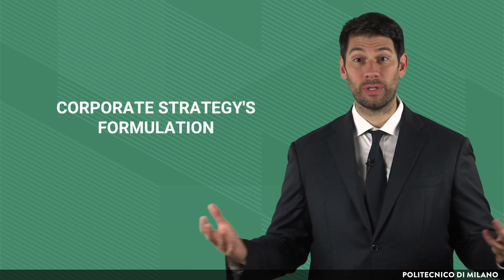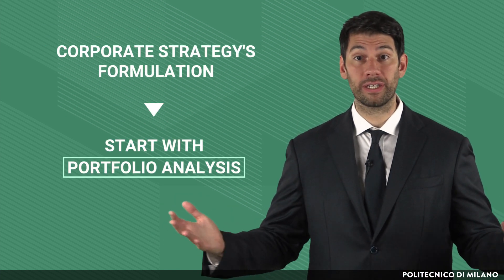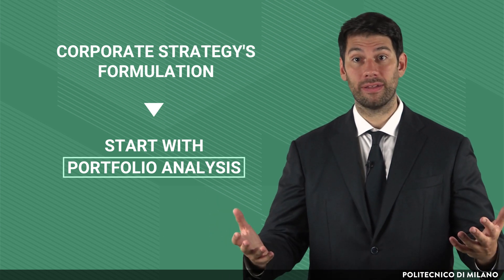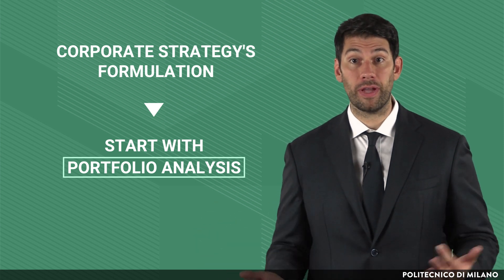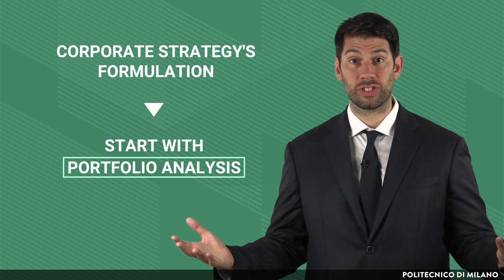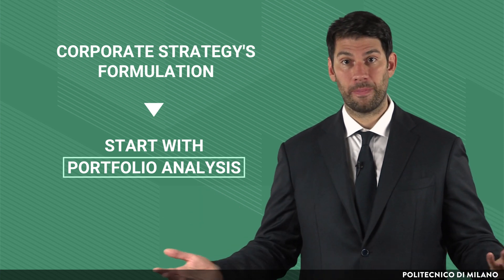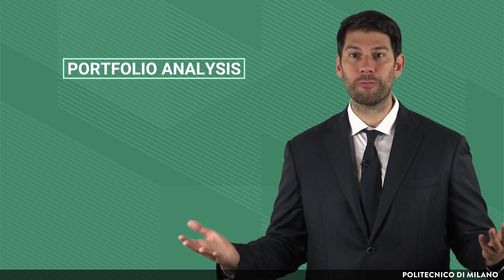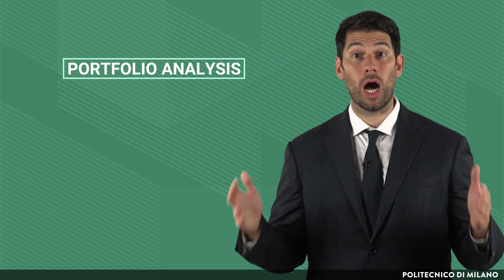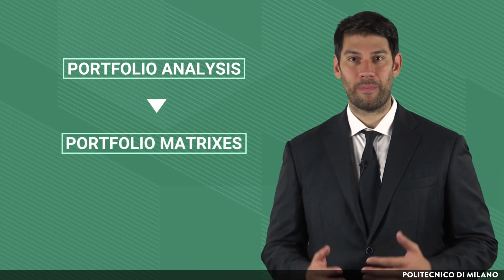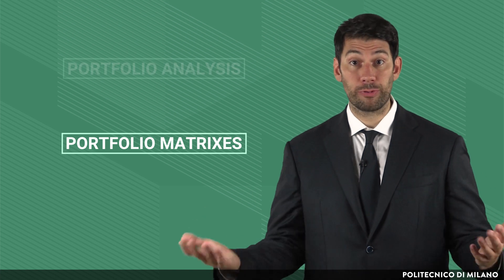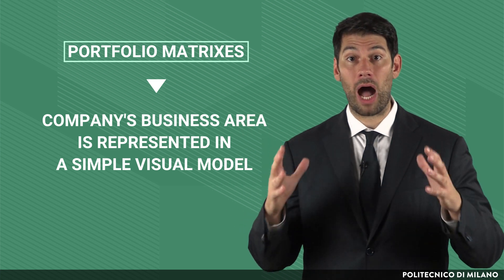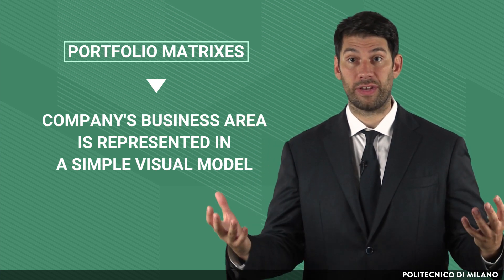Corporate strategy's formulation should then start with the analysis of the current company's portfolio — that is, the mapping of the products of a company — which allows us to understand if such portfolio is balanced or not from a financial and strategic perspective. In order to support this process, the most widespread tools used by corporate managers are the so-called portfolio matrices. The basic idea behind such matrices is to represent a diversified company's business areas in a simple visual model to support corporate strategy definition.